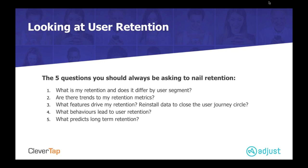Fourth question: what behaviors lead to user retention? You have to find out why users are staying or churning, and identify which specific behaviors individual users take and see how those affect retention over time. You can use behavioral cohorts — instead of looking at all new users, look at new users who perform a specific action or set of actions and see how that correlates with their retention, to find features that bring users back time and again.